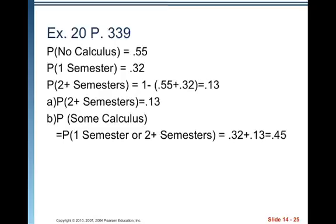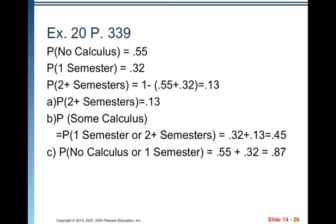No more than one semester of calculus. So that means you either have no calculus or one semester. So again, disjoint events so we can add them up. 0.55 plus 0.32 is 0.87.